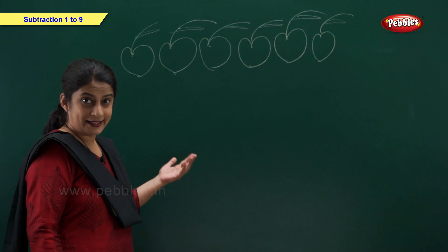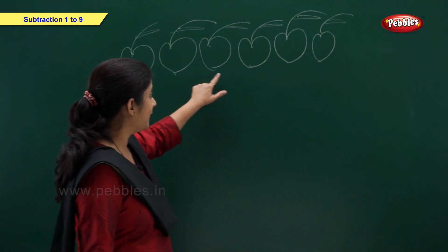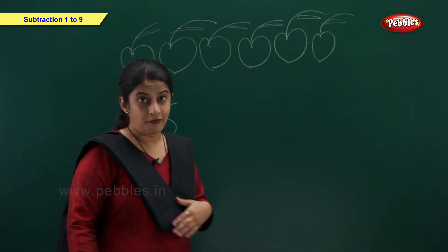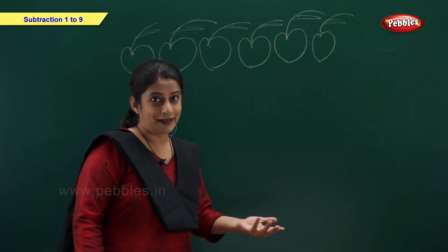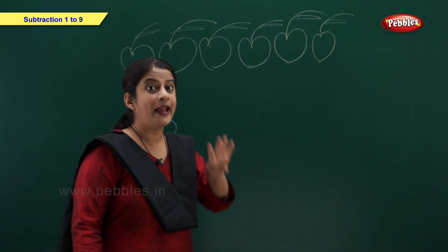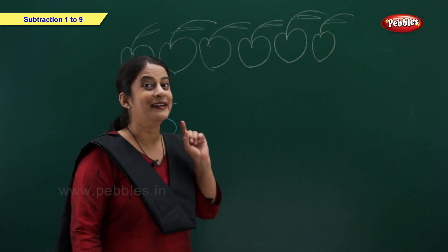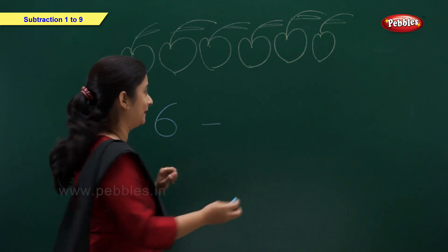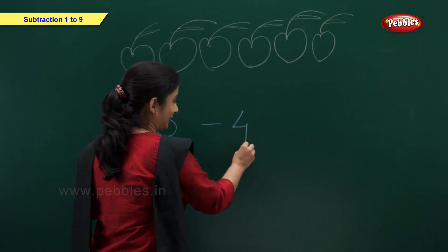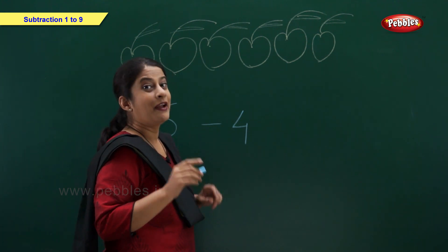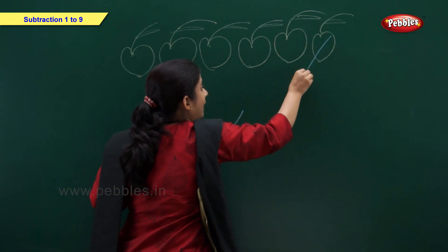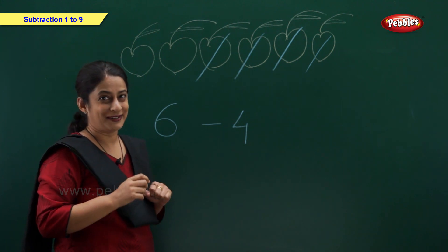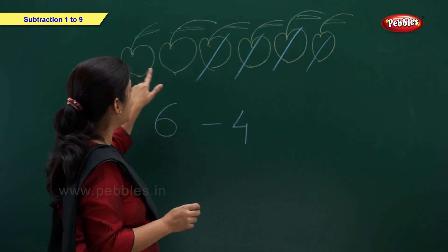I have 6 apples: 1, 2, 3, 4, 5, 6. I gave 4 apples to my friend. So take away 4 apples, but remember we are going to write the minus sign, not 'take away'. So let's take away 4 apples: 1, 2, 3, 4. So how many apples left? 1 and 2.